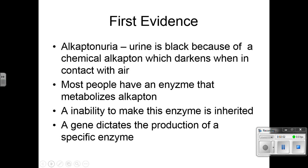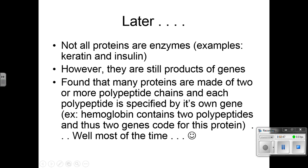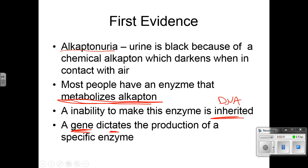So what was the first evidence for this? Alkaptonuria is a condition where the urine is black because of a chemical that darkens when it comes in contact with the air. But most people have an enzyme that actually metabolizes alkapton, that chemical, so we don't have black urine. The inability to make that enzyme is actually inherited in your DNA. A gene, which is just a smaller sequence of DNA, dictates or controls the production of that enzyme. So not having that gene, or having a mutated form of it, will not produce that enzyme and thus your urine will be black.